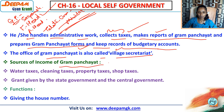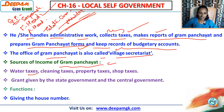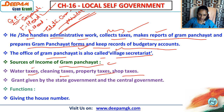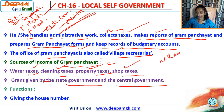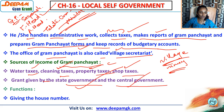Sources of income of the gram panchayat include water tax, cleaning tax, property tax, and shop tax. These are the sources of income. Additionally, grants are given by the state government and the central government to particular villages.